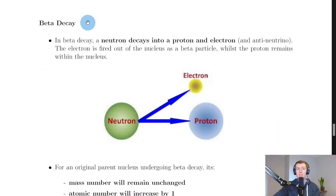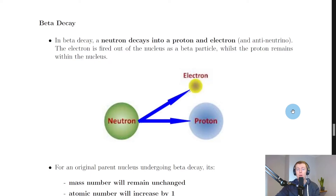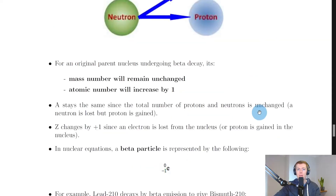Moving on to beta decay: in beta decay a neutron decays into a proton, an electron, and an antineutrino. The electron is fired out of the nucleus as a beta particle whilst the proton remains within the nucleus. We actually saw this in the particles and waves topic when we looked at leptons and neutrinos. Beta decay is really just the emission of a beta particle, i.e. an electron, from the nucleus.